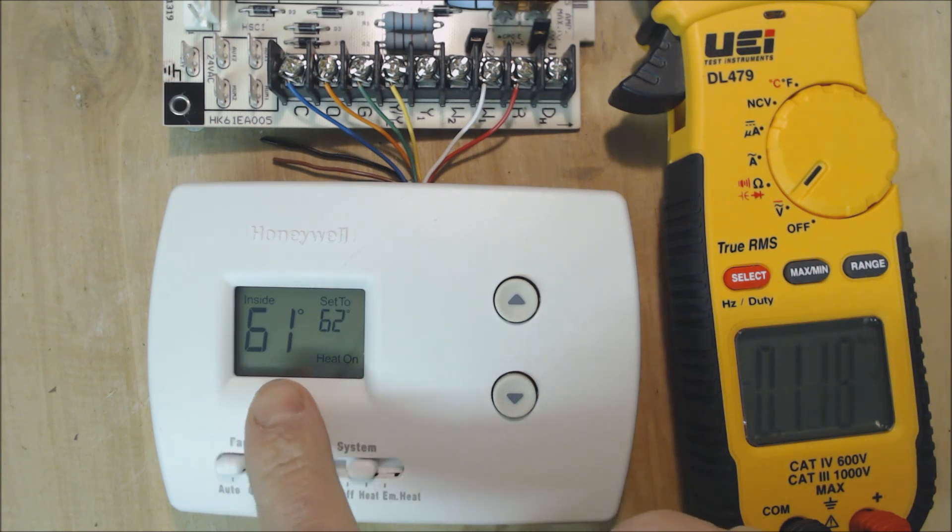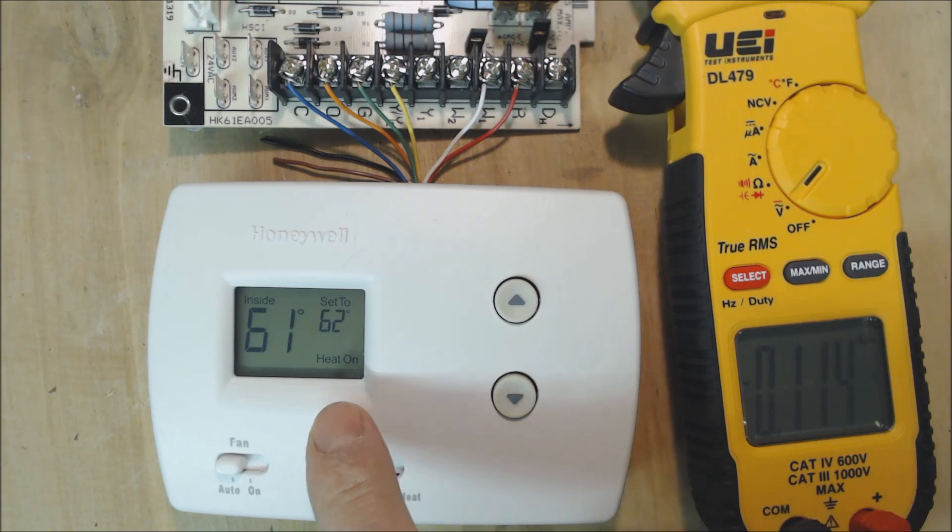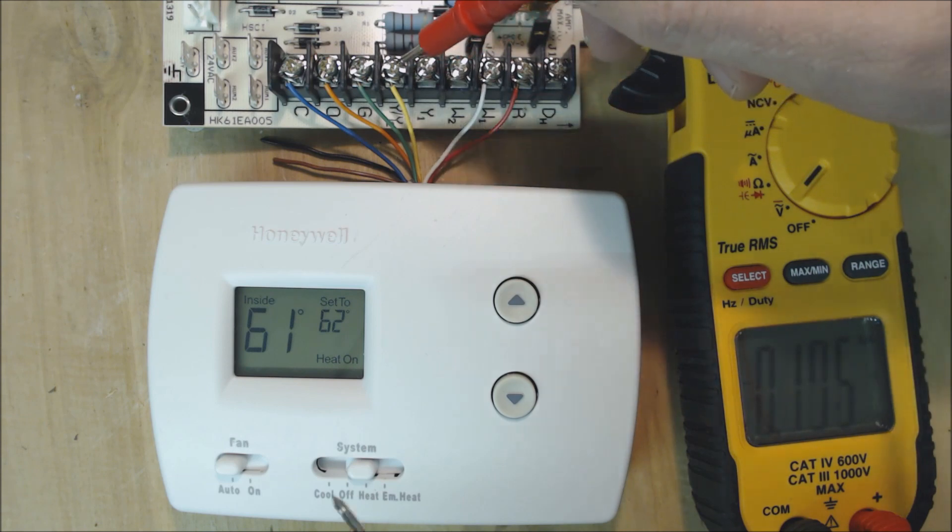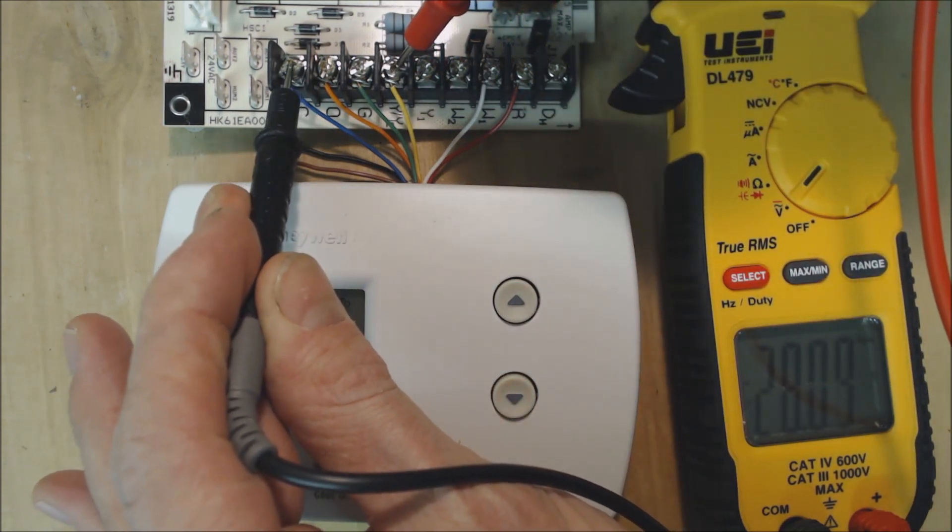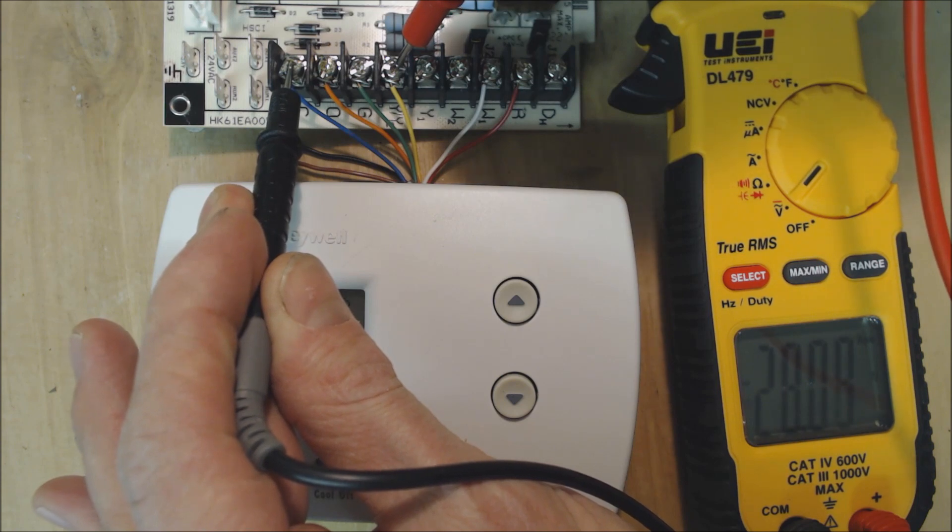The temperature in the room went up to 61. I set it to 62. Five minutes has now passed. Heat is on. R is now touching Y, and we can confirm that by reading right here from Y to C, and we see we're reading 28 volts.